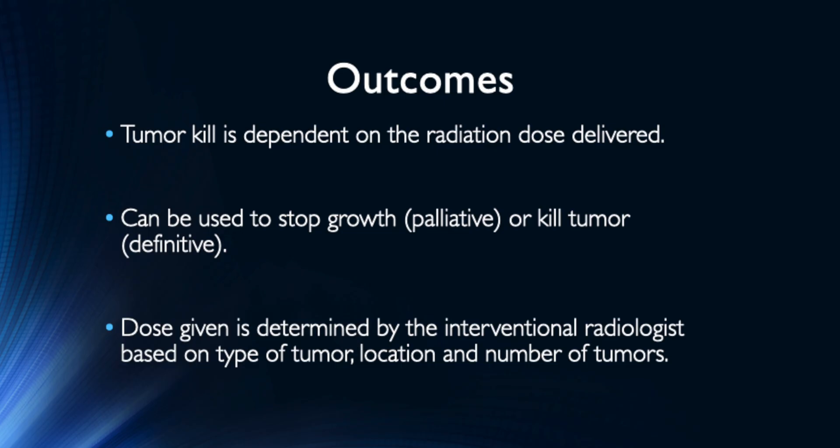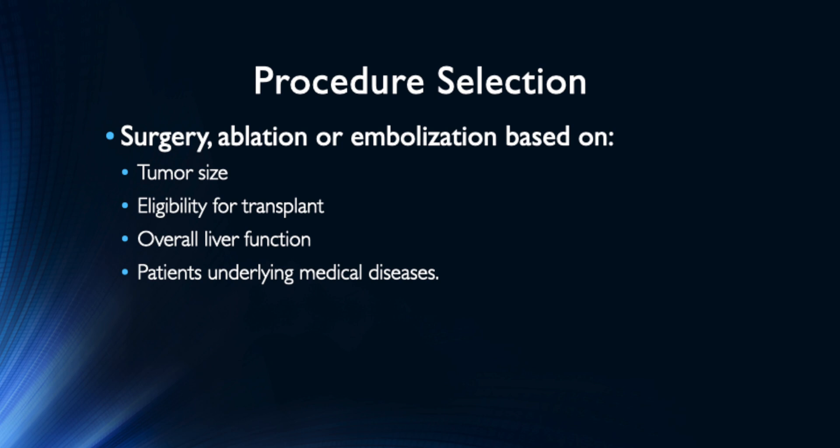TARE can be performed to stop or slow the growth of tumors, termed a palliative therapy. For other patients with only a few liver tumors, TARE can be used to completely kill the tumor using higher doses of radiation. Evaluation of the imaging and patient are the most important factors to determine the best options. Often the decision for the best procedure is made prior to your visit with the interventional radiologist, oncologist, and surgeon. Treatment of the liver tumors does not preclude other tumors from growing outside the liver, so this treatment is often coupled with other therapies.